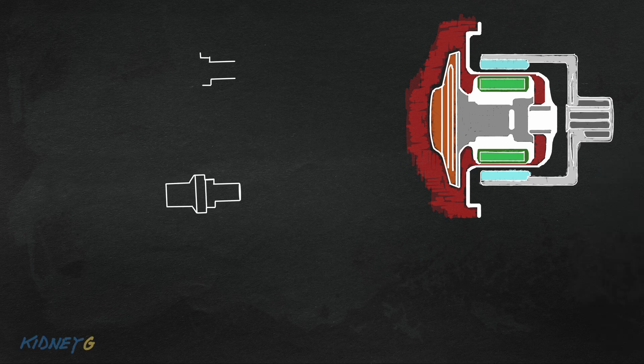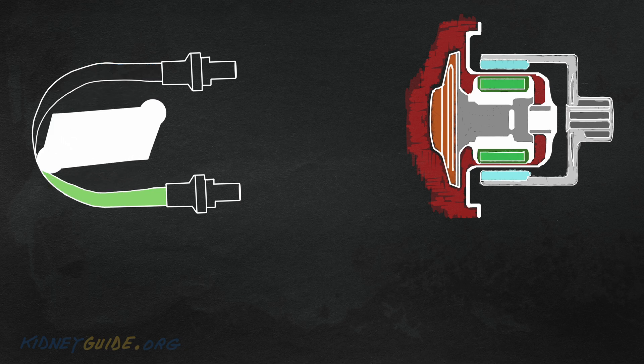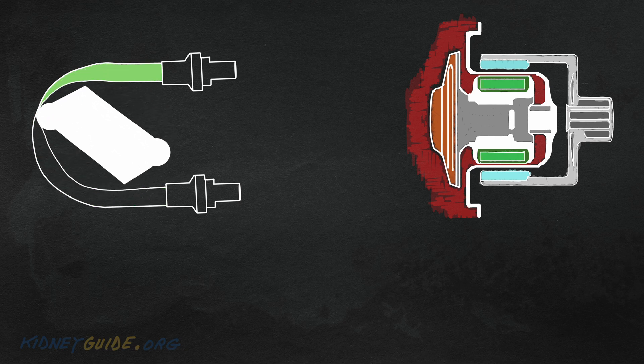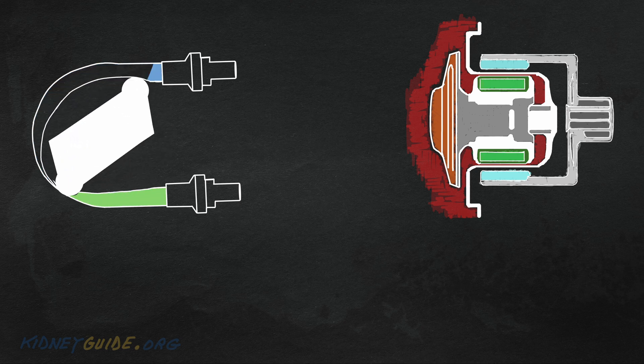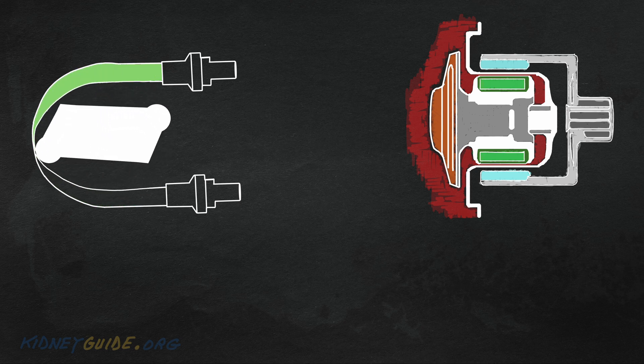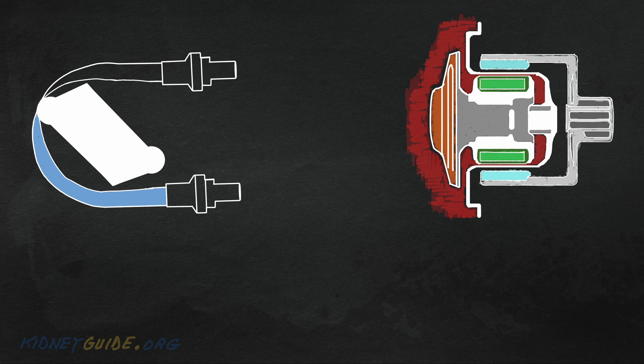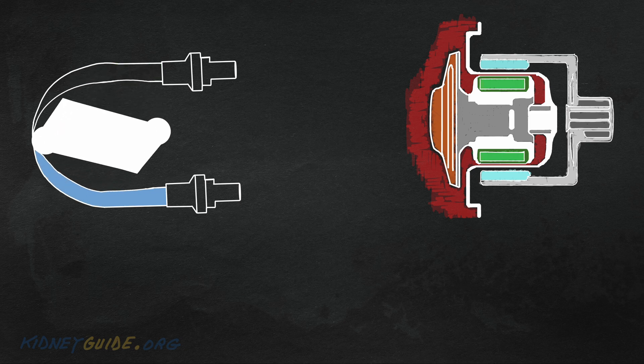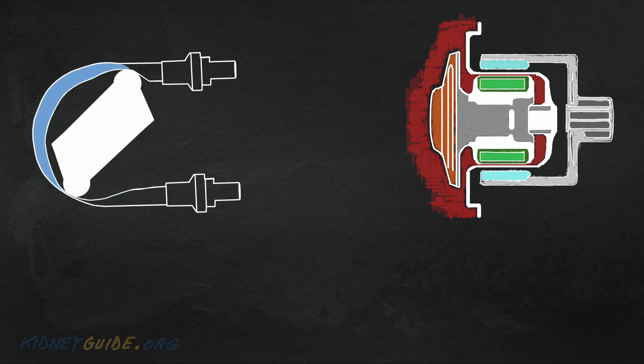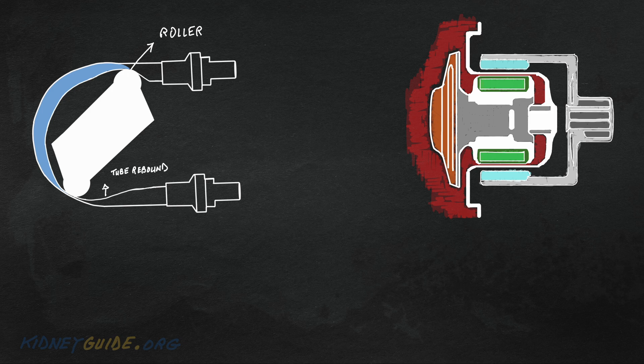In comparison, roller pumps are a type of positive displacement peristaltic pumps. The rotor has a number of rollers, two in this case, which presses the tube as they rotate by. The part of the tube which is compressed is closed, forcing a constant amount of blood to move through the tube. Importantly, as the tube bounces open after the roller passes, blood is drawn into the tube from access. That's how you get your negative pressure.